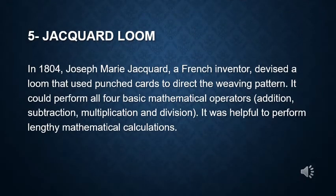The next device is the Jacquard Loom. It was invented by a French inventor, Joseph Marie Jacquard, in the year 1804. The machine was able to perform multiplication, division, subtraction, and addition and was very helpful to perform lengthy mathematical calculations.